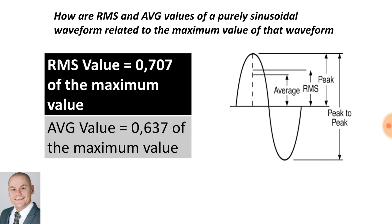Now, to calculate the RMS value and the average value, to calculate the RMS value, it will be 0.707 multiplied by the maximum value. To calculate the average value, it will be 0.637 multiplied by the maximum value.